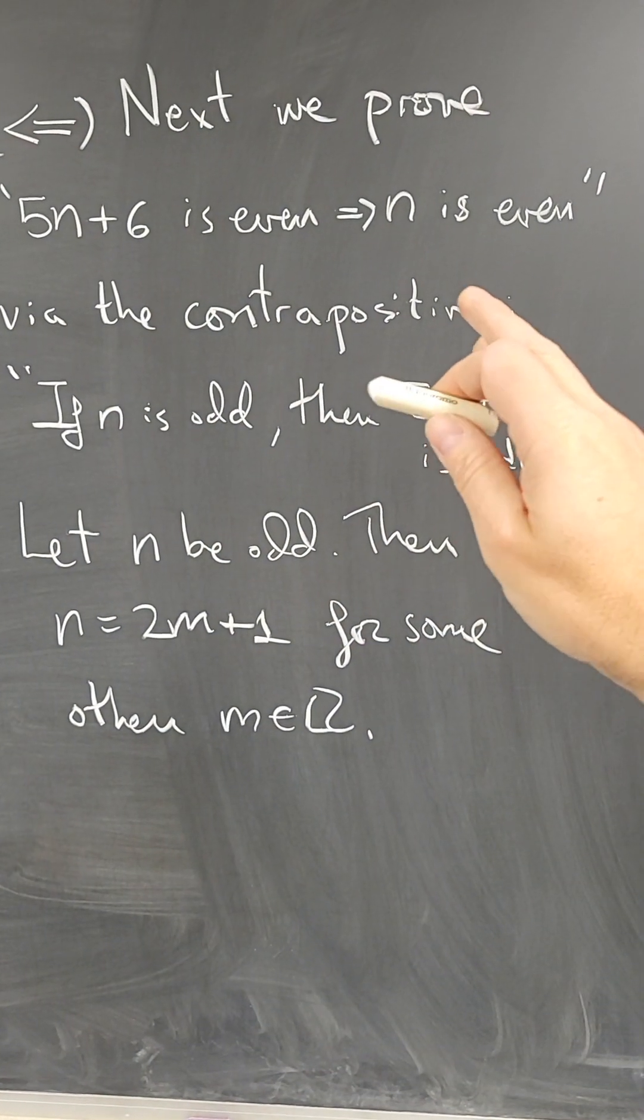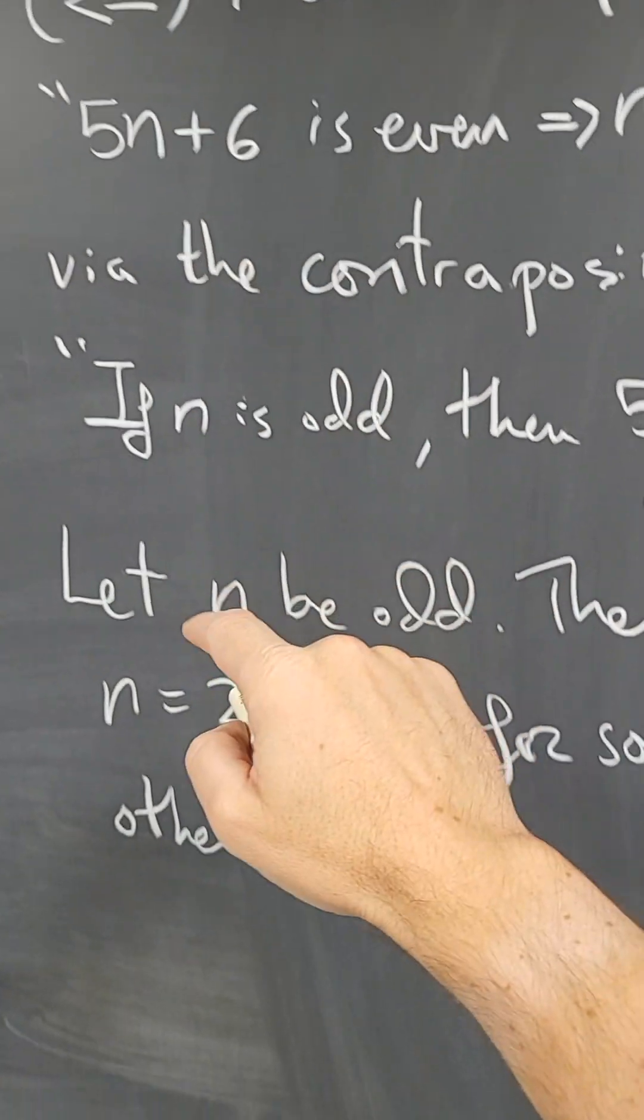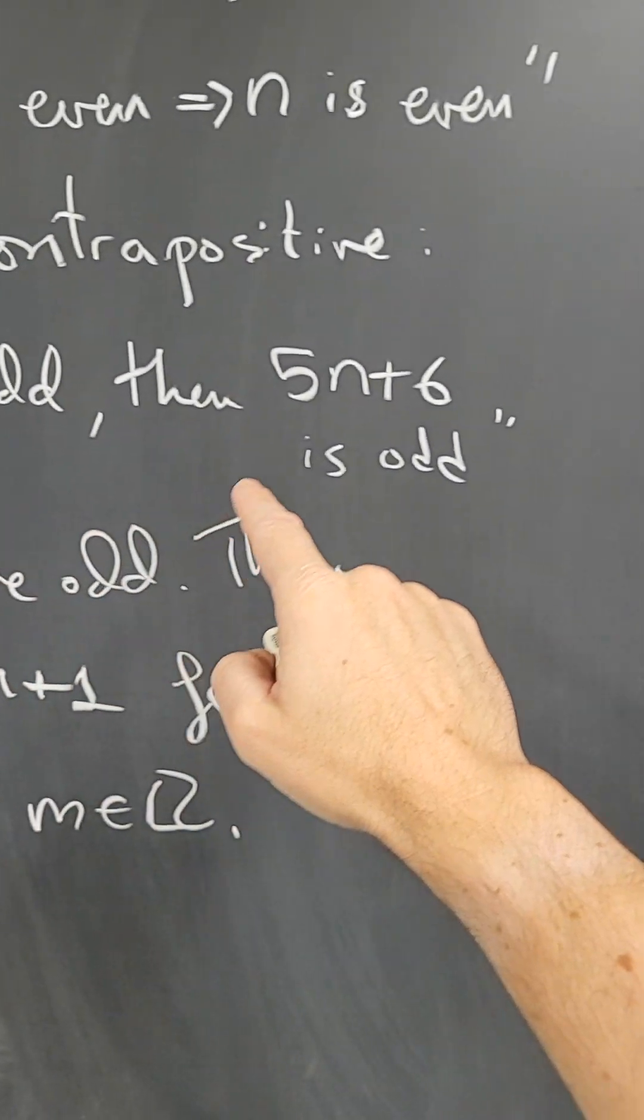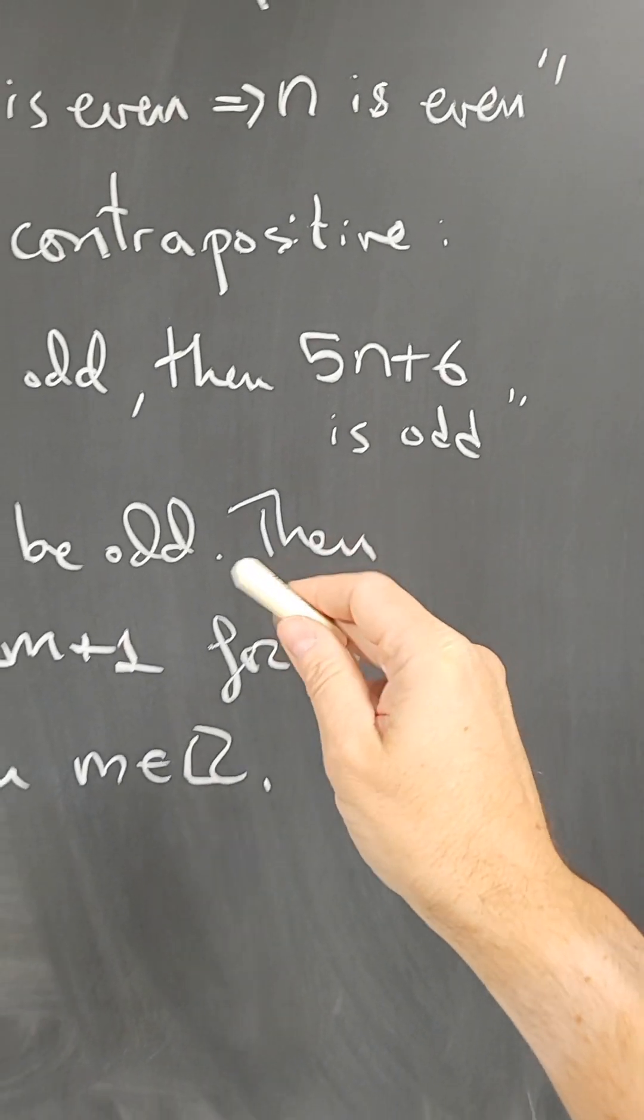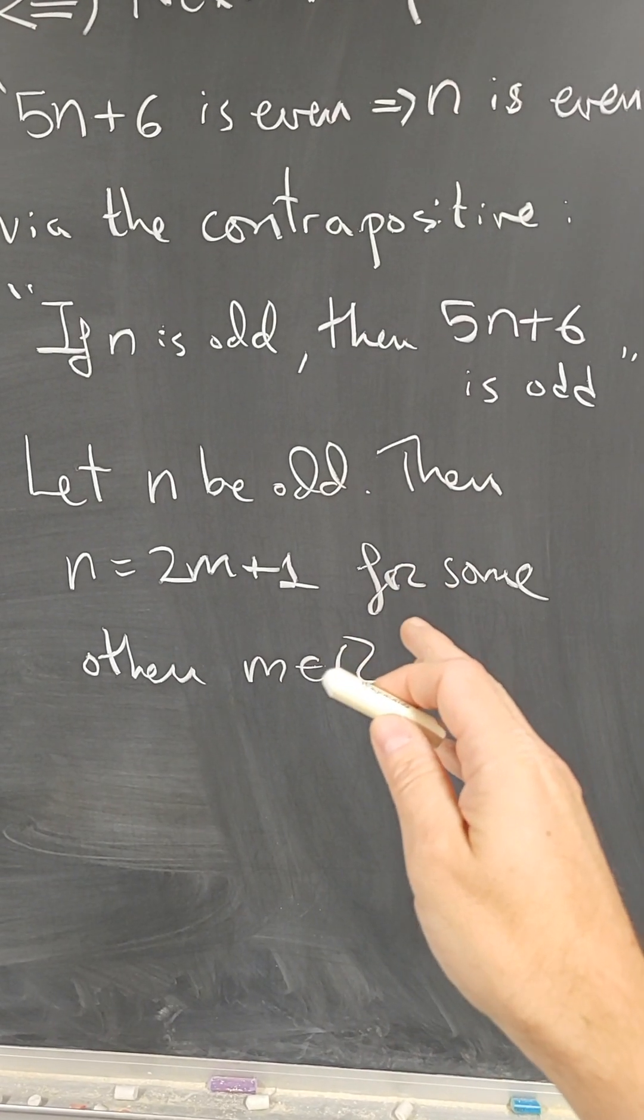So to prove that implication, I'm going to prove the contrapositive. So if not that, then not this. So if n is odd, then 5n plus 6 is odd. So we're going to prove that statement now. And the proof of the contrapositive goes as follows.